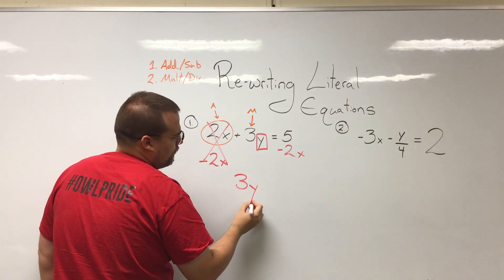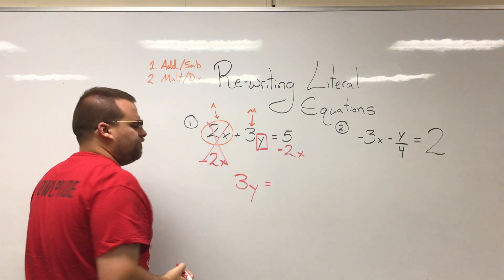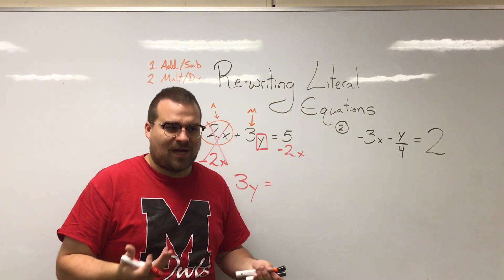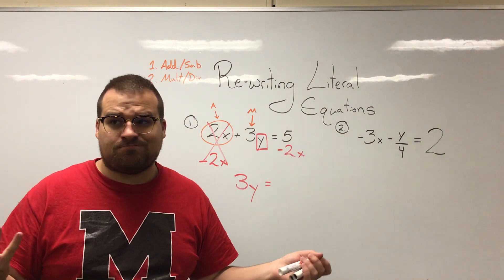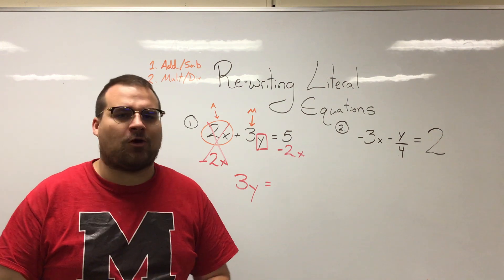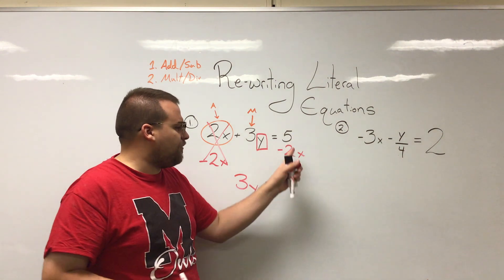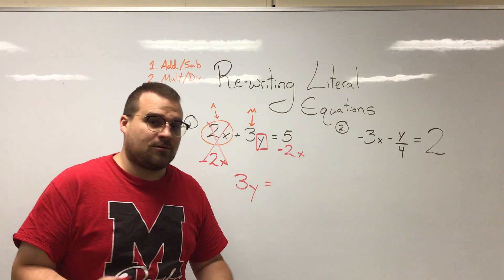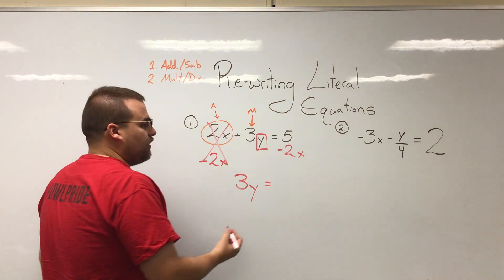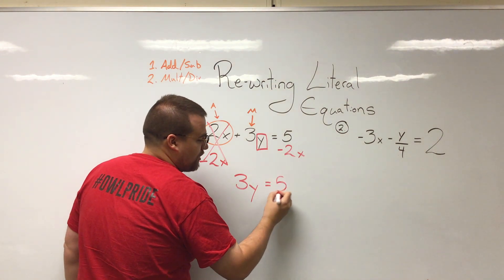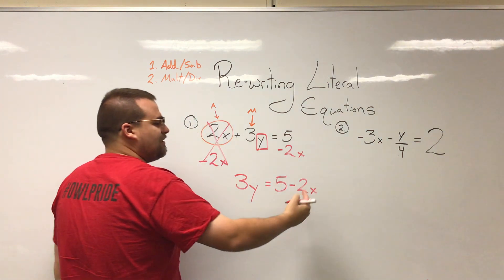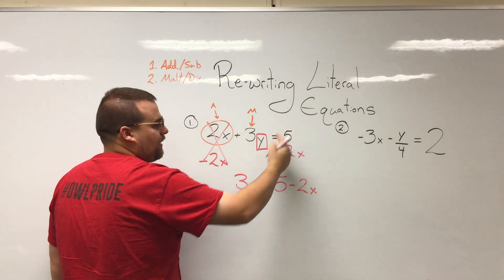But what's that equal? Well can 5 and 2x combine? Can we say oh well that would be 3x? No we can't because these have different variable configurations and therefore they can't combine. The best we can do is just writing them right next to each other, 5 minus 2x.